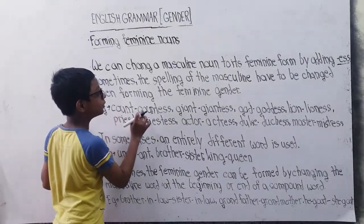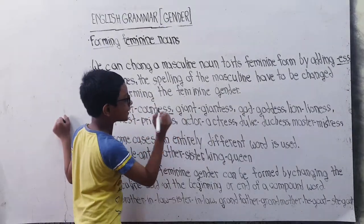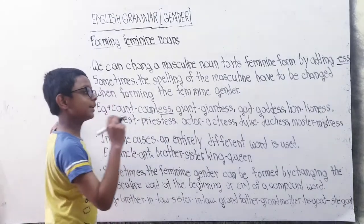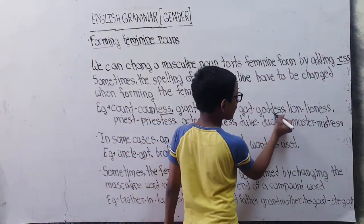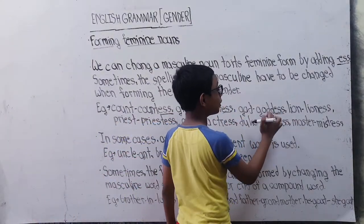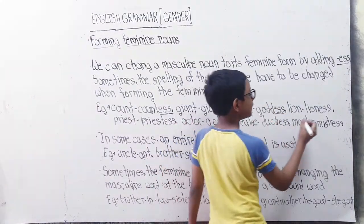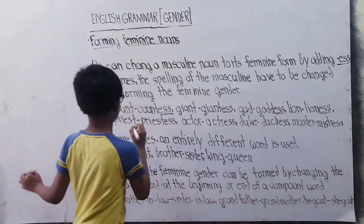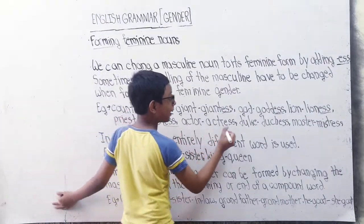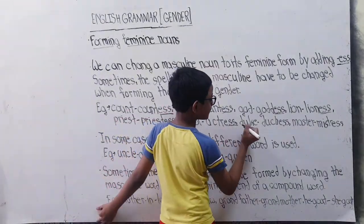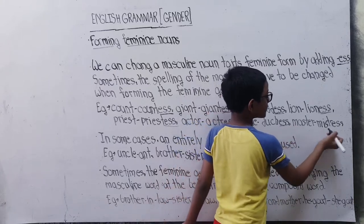Count — Countess. Giant — Giantess. God — Goddess. Lion — Lioness. Priest — Priestess. Actor — Actress. Duke — Duchess. Master — Mistress.